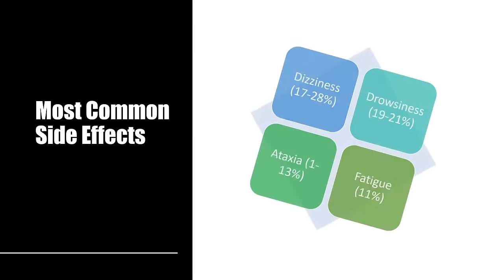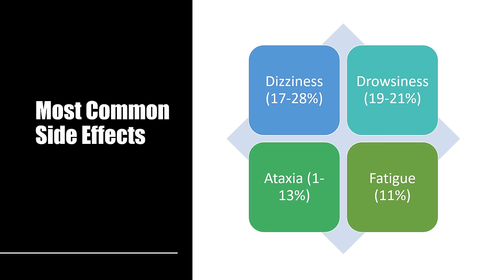The most common side effects are dizziness, drowsiness, ataxia, and fatigue. These are the limiting side effects — some people simply cannot take this medication because the drowsiness is overwhelming. Ataxia is where you almost feel intoxicated or drunk; some people can't drive or function properly. That's why we start the dose slowly. Generally after a couple of days, the drowsiness and dizziness improve, and the majority of people are able to tolerate the medication after the first week or so.